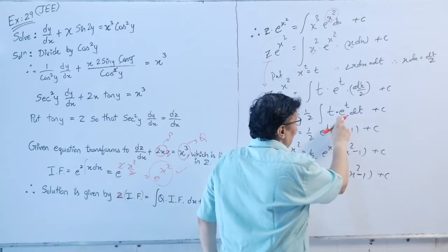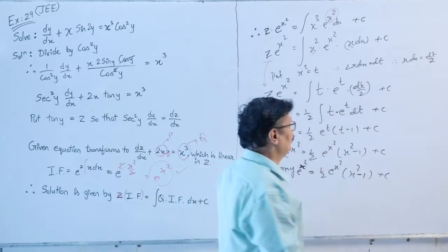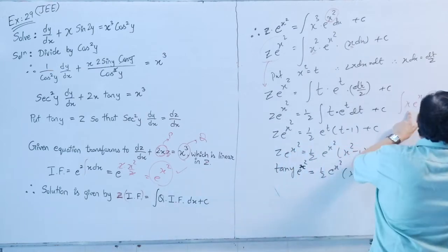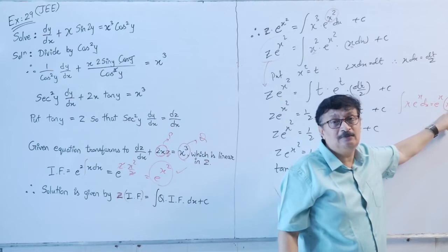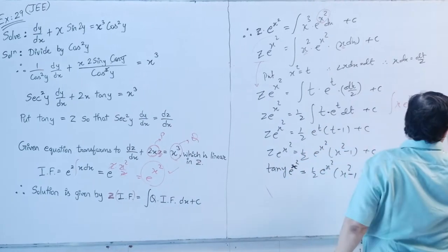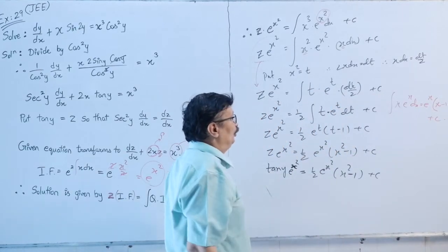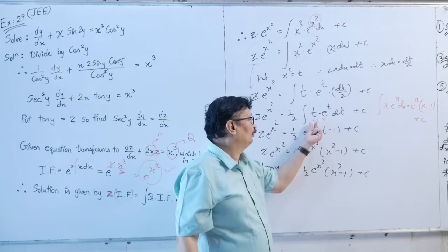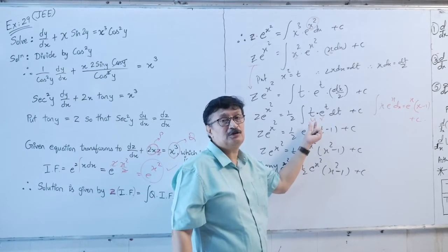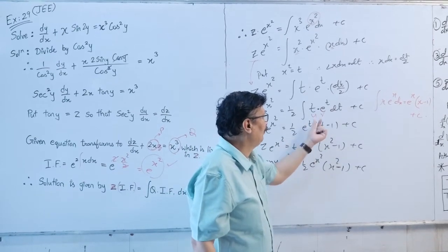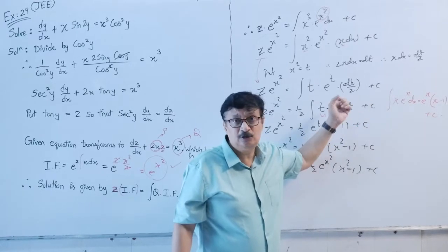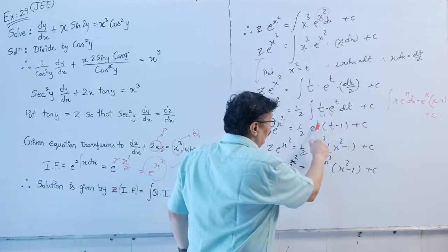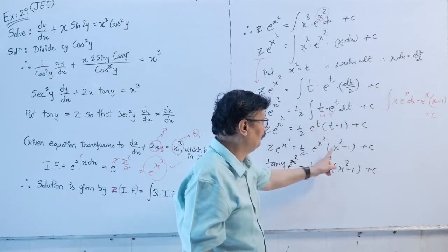Using integration by parts (LIATE: algebraic first, exponential second): (1/2)∫t·eᵗ dt = (1/2)·eᵗ·(t − 1) + c. Substituting back t = x²: z·e^(x²) = (1/2)·e^(x²)·(x² − 1) + c. Therefore tan(y)·e^(x²) = (1/2)·e^(x²)·(x² − 1) + c is the answer.